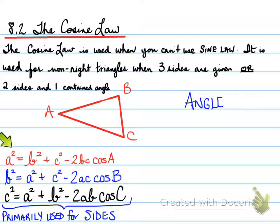or you need to find side A, you're going to use angle A. If you need to find side B, B squared equals A squared plus C squared minus 2AC cosine B.